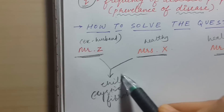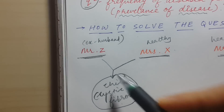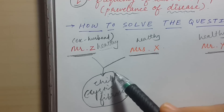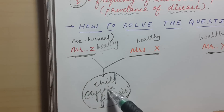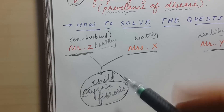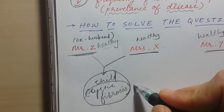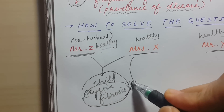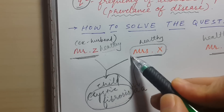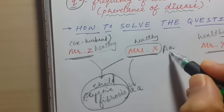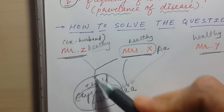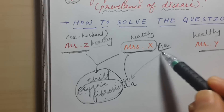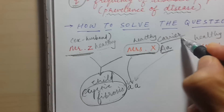From this information, since the child of Mrs. X and Mr. Z had cystic fibrosis — an autosomal recessive disease — the child has genotype aa, meaning they received one mutated gene from each parent. This tells us that Mrs. X, who is healthy, must be a carrier (Aa). She passed the small a to her child. So from this scenario, we know Mrs. X is a healthy carrier.